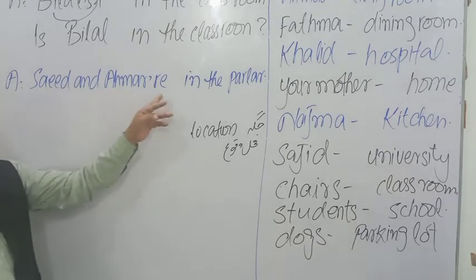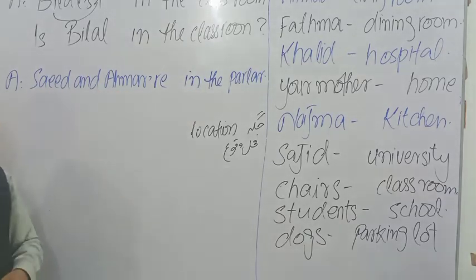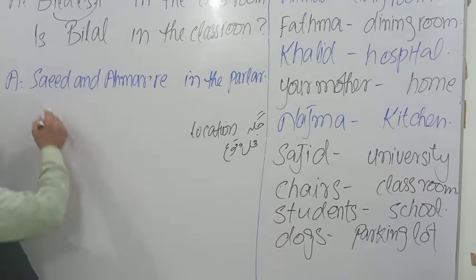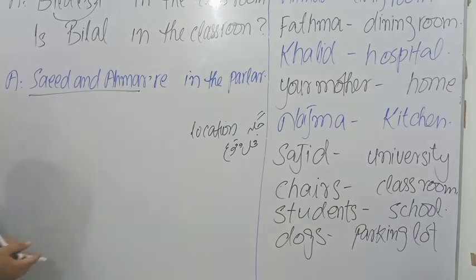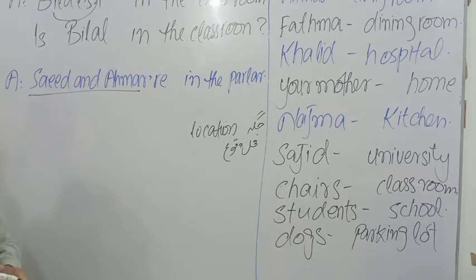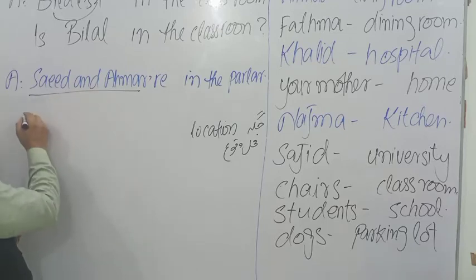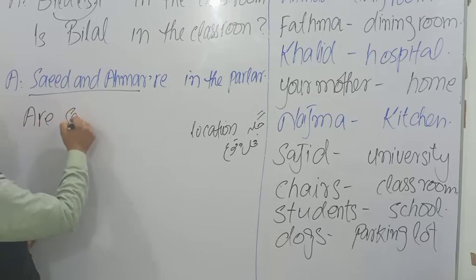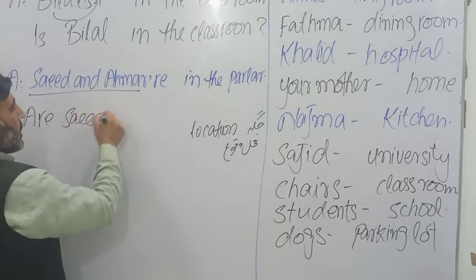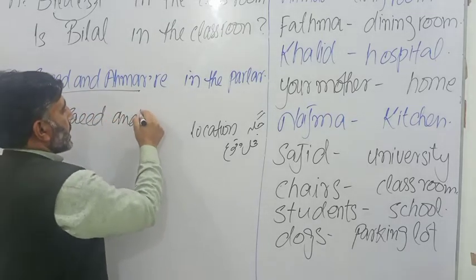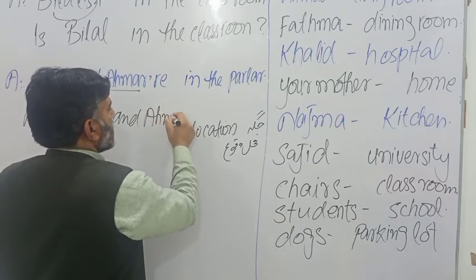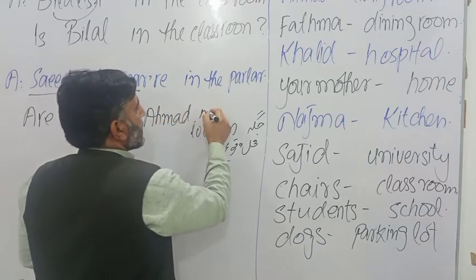Similarly, if we say Saeed and Ahmad are in the kitchen — Saeed aur Ahmad kitchen mein hain — that is a plural noun. Saeed and Ahmad are plural nouns, so before a plural noun we use 'are.' So when we want to make the question sentence, we say 'are' in the beginning: Are Saeed and Ahmad in the kitchen?